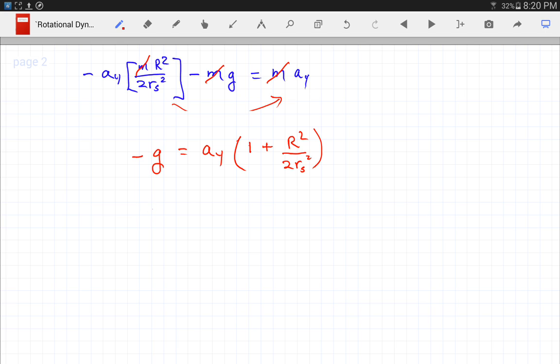Solving this for ay then, ay is equal to minus g divided by 1 plus r squared over 2 rs squared. Or, probably more telling, minus g over 1 plus 1 half times r over rs quantity squared.